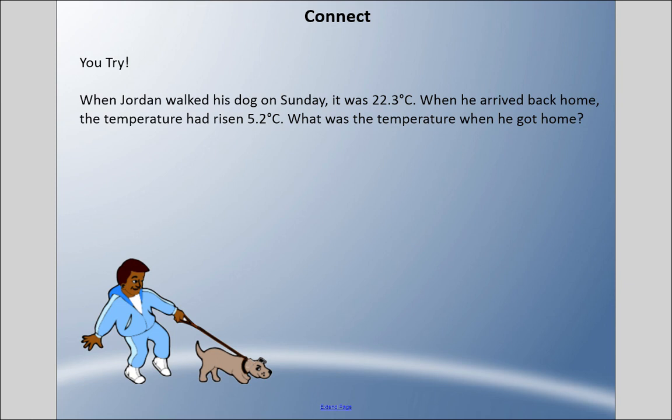All right, I'm personally going to do the regrouping method. It's important that we line up our digits—the tenths line up, the decimals line up—and put a decimal there right away. For our regrouping, three plus two is five, two plus five is seven. We didn't have to regroup at all. So the answer here is 27.5 degrees Celsius when he got home.